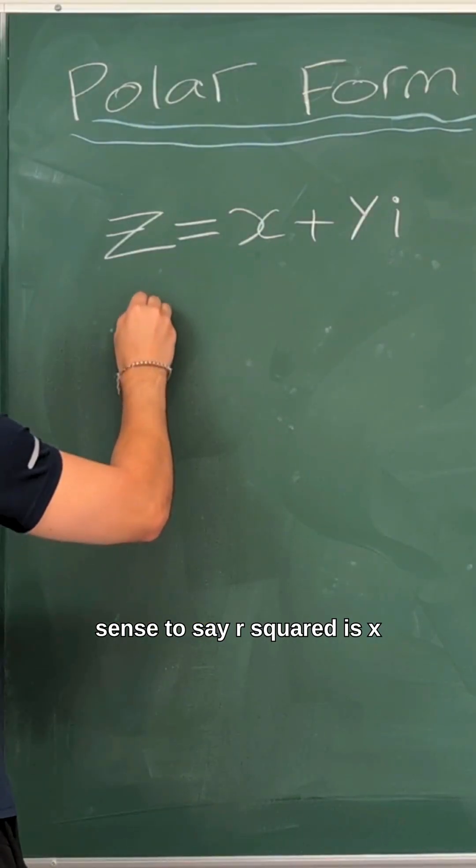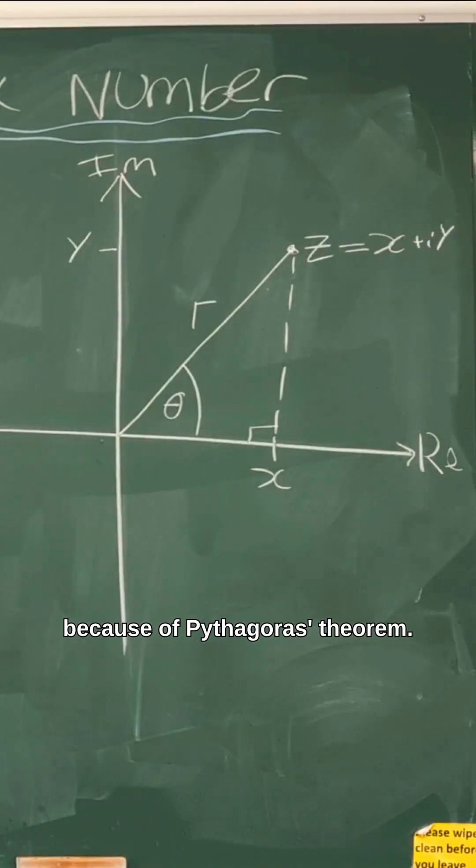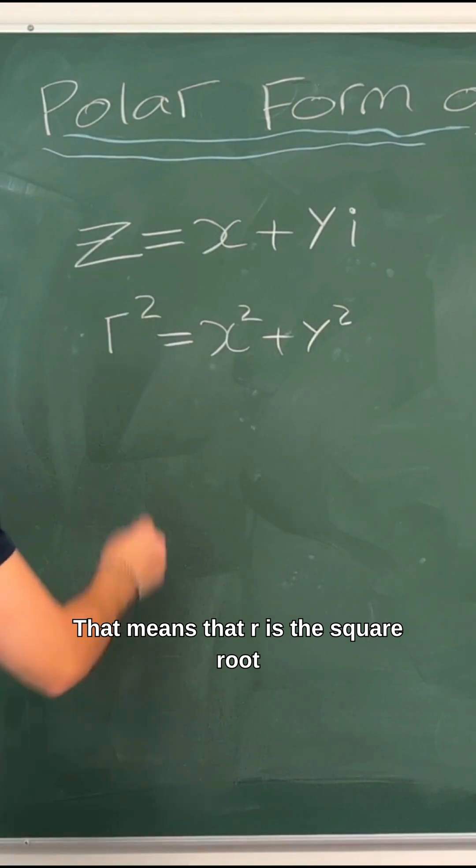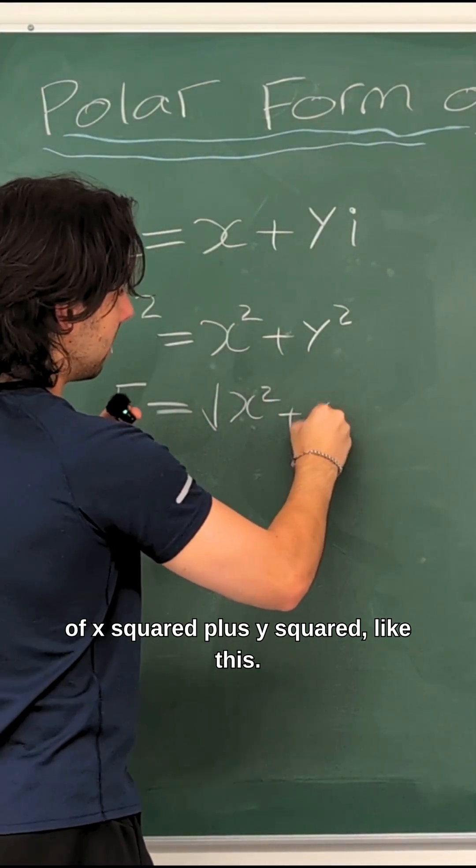Hopefully it makes sense to say r squared is x squared plus y squared because of Pythagoras theorem. It's a right angle triangle, r is the hypotenuse. That means that r is the square root of x squared plus y squared.